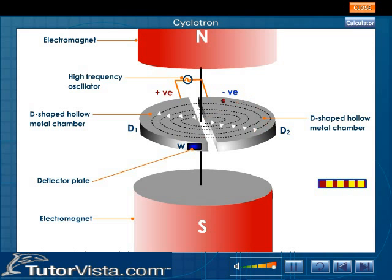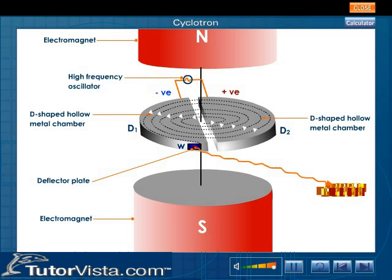their rotational radius increases and the ions spiral out from the Ds. The deflector plate helps to take the ions out and the ions are allowed to hit a target or a nucleus to bring about a nuclear reaction.